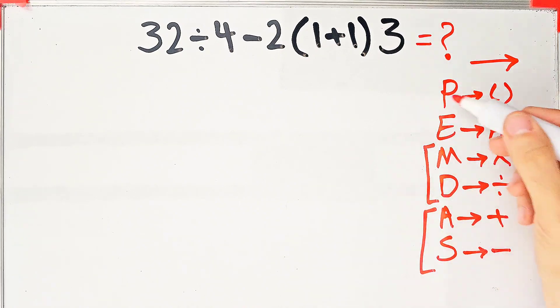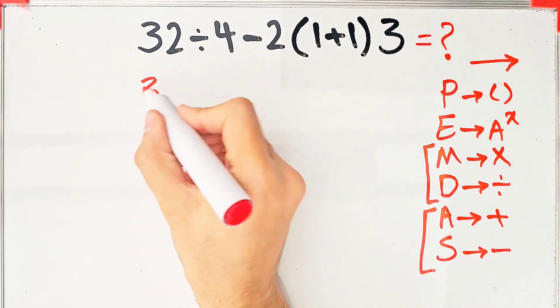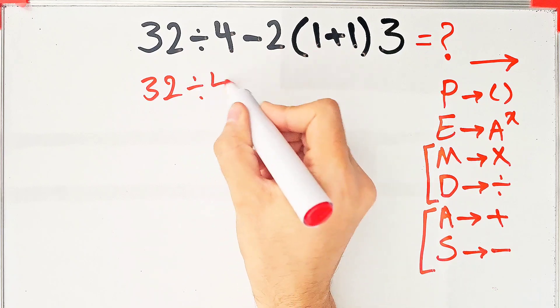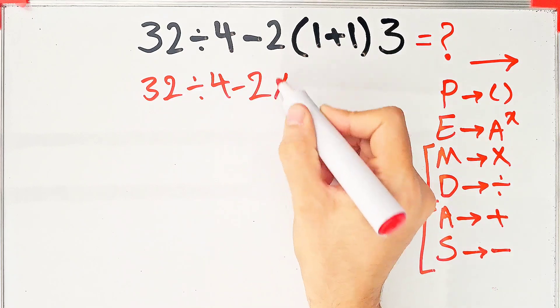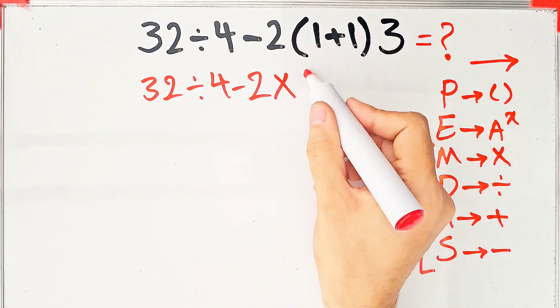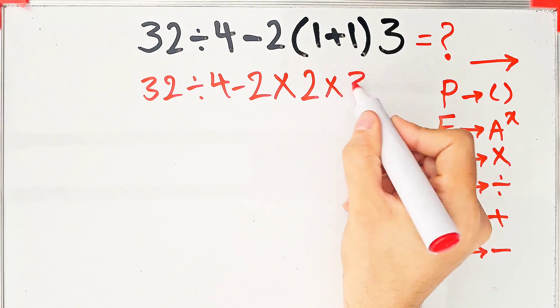first we simplify the parentheses. Inside the parentheses, we have 1 plus 1. 32 divided by 4 minus 2 times 2, then times 3.